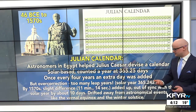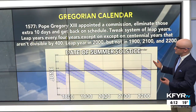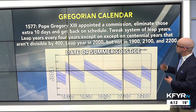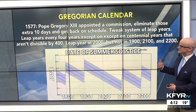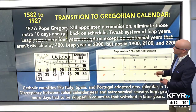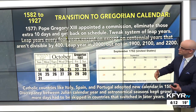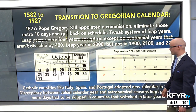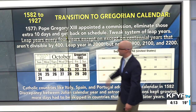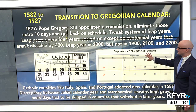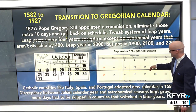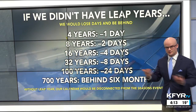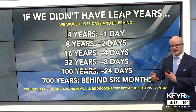So it drifted away from astronomical events like the spring equinox and the winter solstice. In 1577, Pope Gregory XIII developed the Gregorian calendar. He appointed a commission to eliminate those extra 10 days and get back on schedule. He tweaked the system of leap years — leap years every four years, except on those centennial years not divisible by 400. Between 1582 and 1927, countries transitioned to the Gregorian calendar. Catholic countries like Spain, Italy, and Portugal adopted it right away, eliminating those 10 days — so October 1582 was a short month. The United States waited until September of 1752, again shortened by about 11 days.